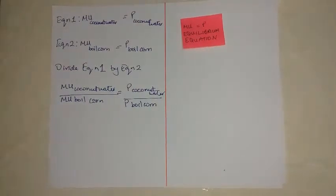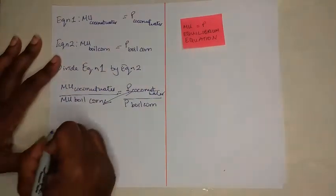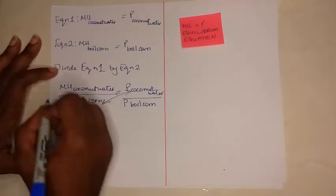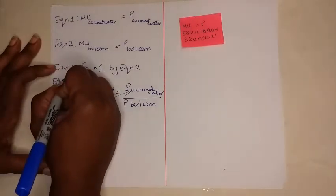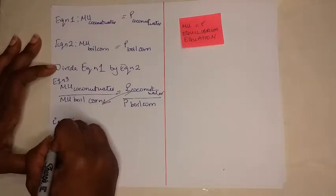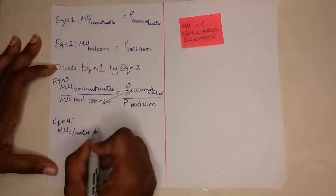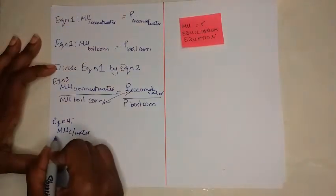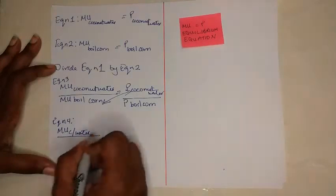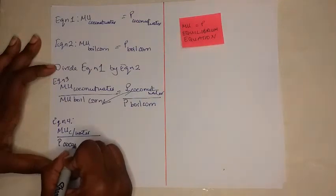Now we can rearrange this equation or what we would call cross multiply. We can cross multiply or rearrange the equation so that we get something looking like this. So we could call this one, before we move on, we can call this one equation 3 and we can move on to now equation 4. So we'll have a situation where we'll have the MU of coconut water over the price of coconut water.